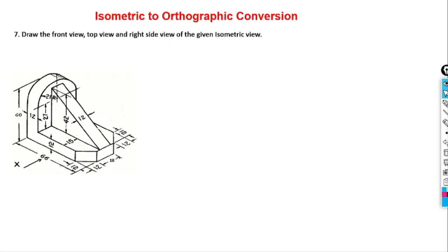We will solve problem number 7: draw the front view, top view, and right side view of the given isometric view. The total length of the figure is 66 mm, total height is 60 mm, and it looks similar to the previous problem we have solved. So here we will solve the problem.